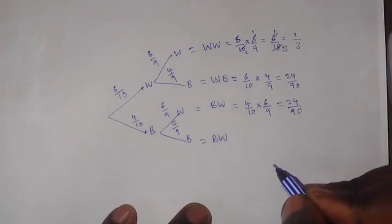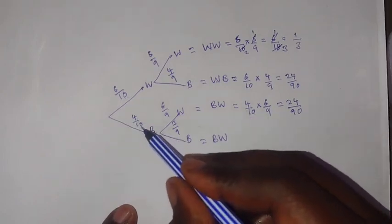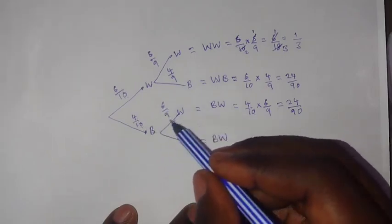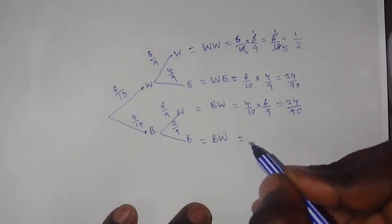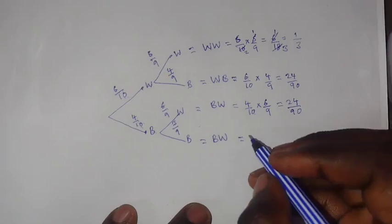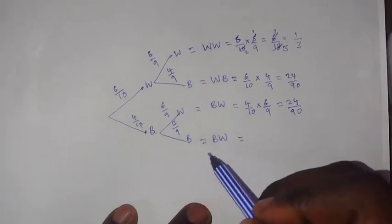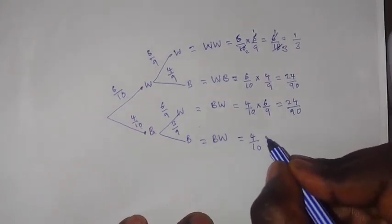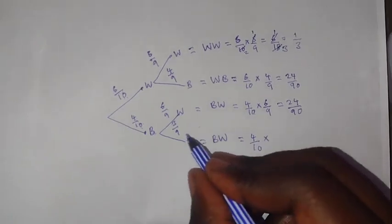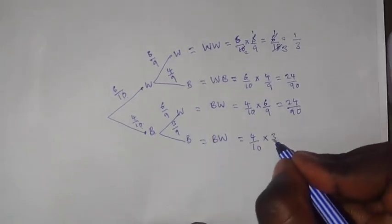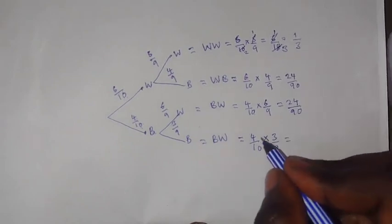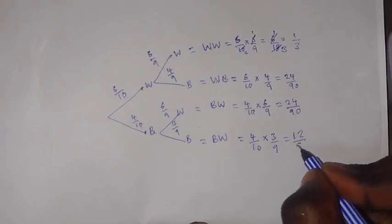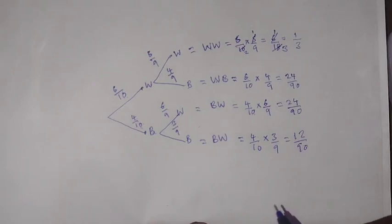For black-black, we multiply 4 over 10 times 3 over 9. So 4 times 3 gives us 12, and 10 times 9 gives us 90, giving 12 over 90. You can reduce this further if you want.